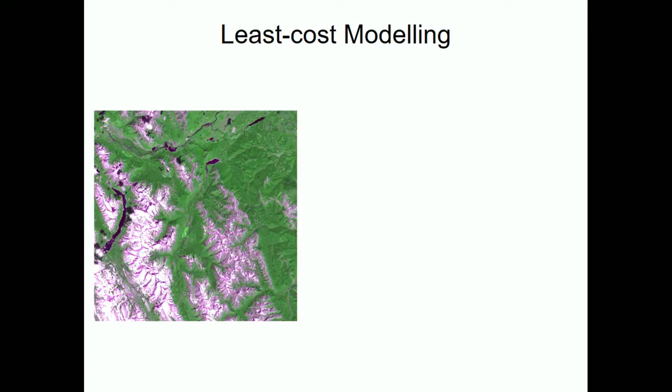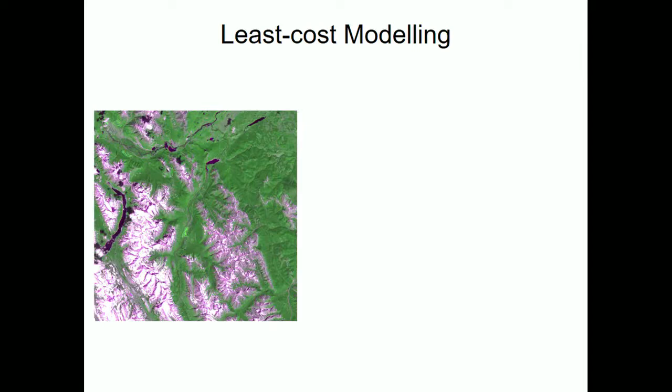Basic process: start with a landscape (here, the Canadian Rockies), rasterize it into a pixelized grid, and pick out land cover categories relevant for the species you're modeling — forest, grass, rock, and water. This process of simplifying the landscape is the trickiest part — the most like 'black magic.'